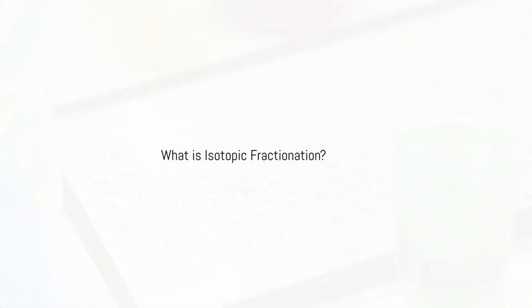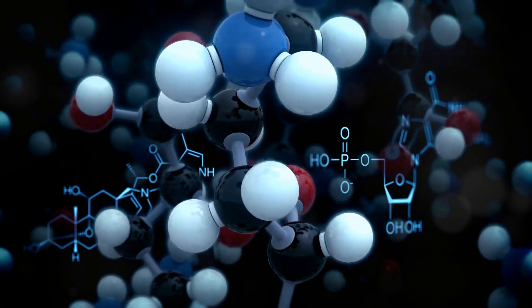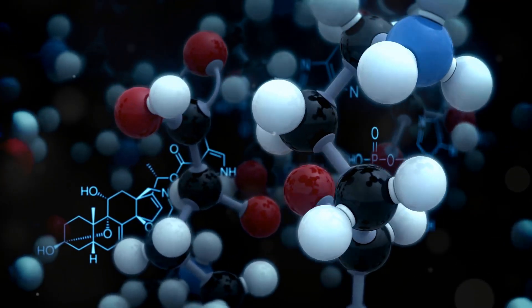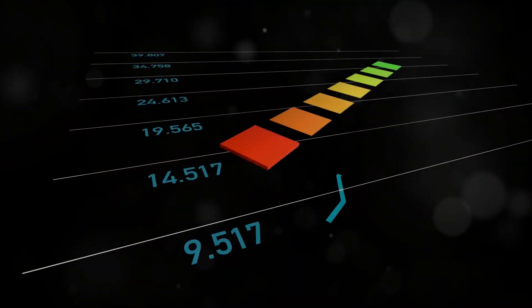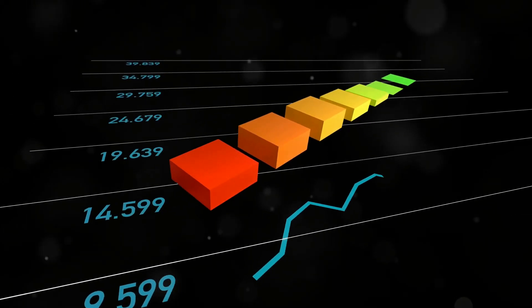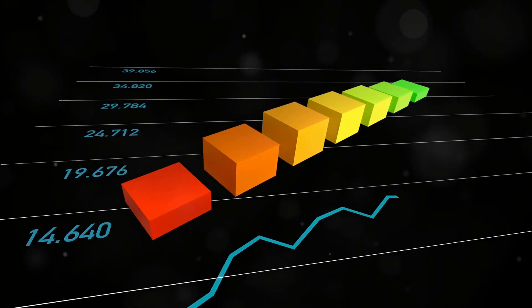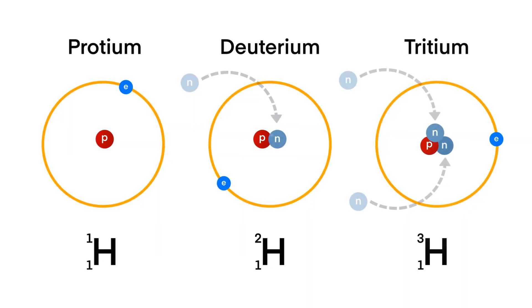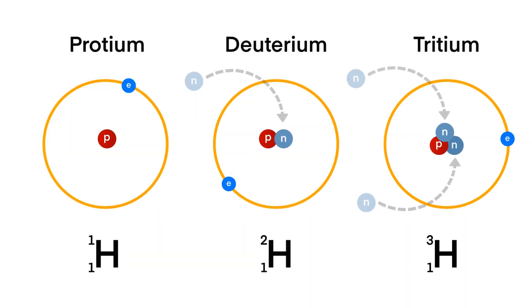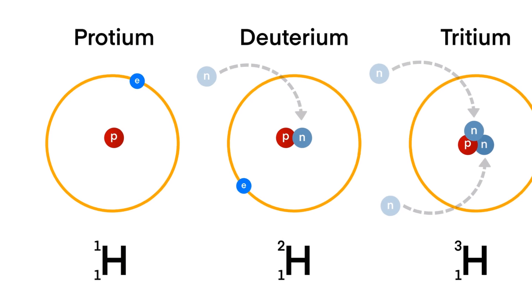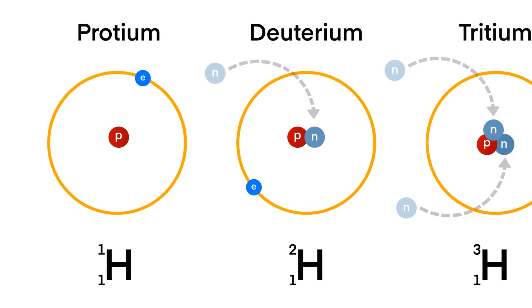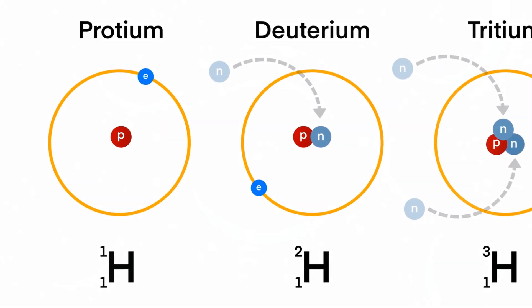Isotopic fractionation refers to the variation in behavior of isotopes in different physical or chemical processes. Due to their different masses, isotopes migrate or react at different rates. For example, the isotopes of hydrogen — deuterium (D) and hydrogen (H) — behave differently in evaporation or chemical reactions due to their mass differences.